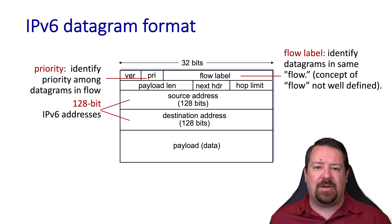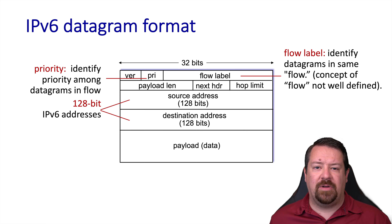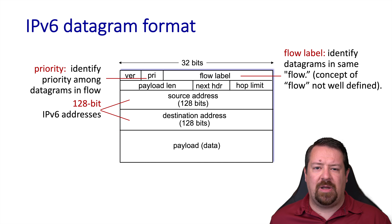The priority field allows the sender to indicate within a given flow a relative priority for packets. One can imagine that a layer 3 router would want to do preferential dropping, whereby low priority packets are dropped first. We also have the next header field, which serves the same function as the protocol number in the IPv4 header, telling us whether the next header is a TCP, UDP, or any other layer 4 protocol header. However, it can also tell us if the next header is an IPv6 option header.